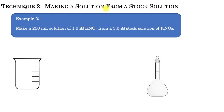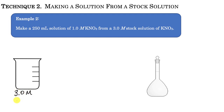In technique number two, we're making a solution from a stock solution — a solution that's already been created. The example is to make a 250 mL solution of 1 molar potassium nitrate from a 3 molar stock solution. So this stock solution here is already a 3.0 molar potassium nitrate solution.